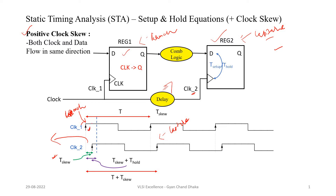Ideally, data is launched at this clock edge and it will get captured by the next clock edge of clock 2. When there is no clock skew, the data is launched at this clock edge and captured at the corresponding clock edge. But once there is a clock skew, the capture clock has shifted by t_skew time and the capture edge is coming later. The delay between the launch and the capture point has increased by t_skew time.